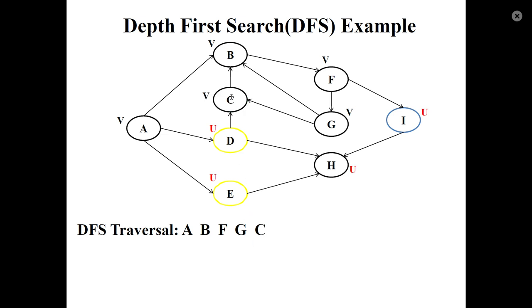Then check C's unvisited neighbors. There are none. Go back to G, which has no more unvisited neighbors. Go back to F. F has another unvisited neighbor, which is I.